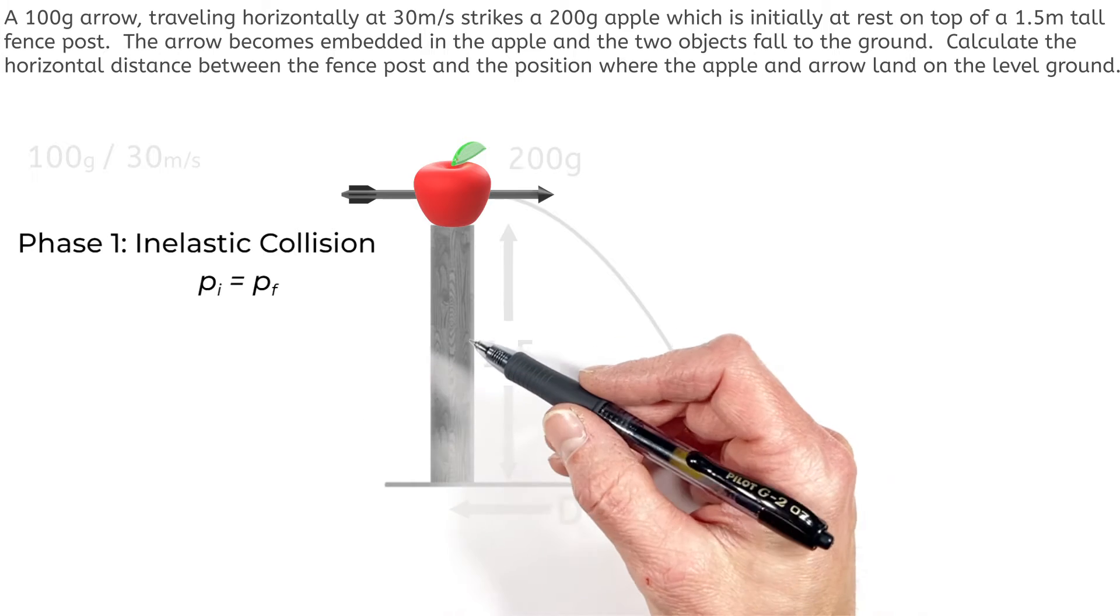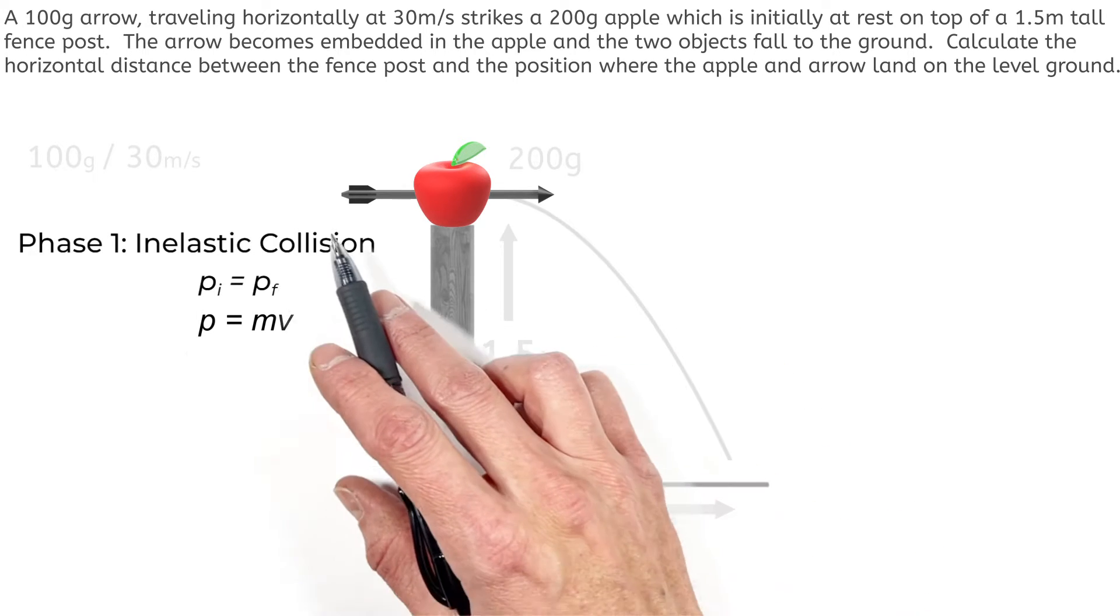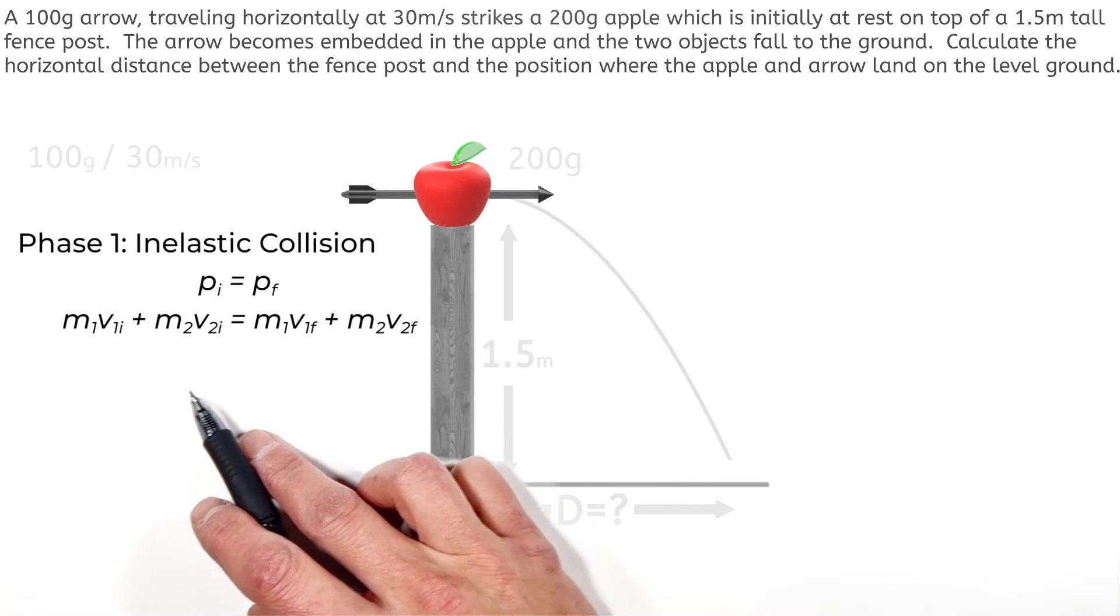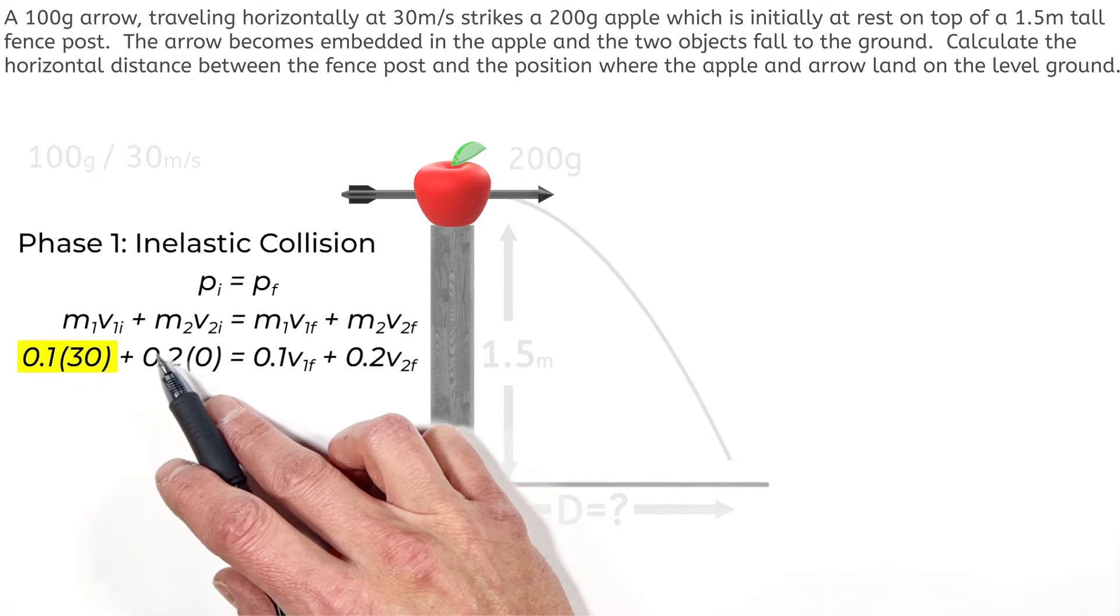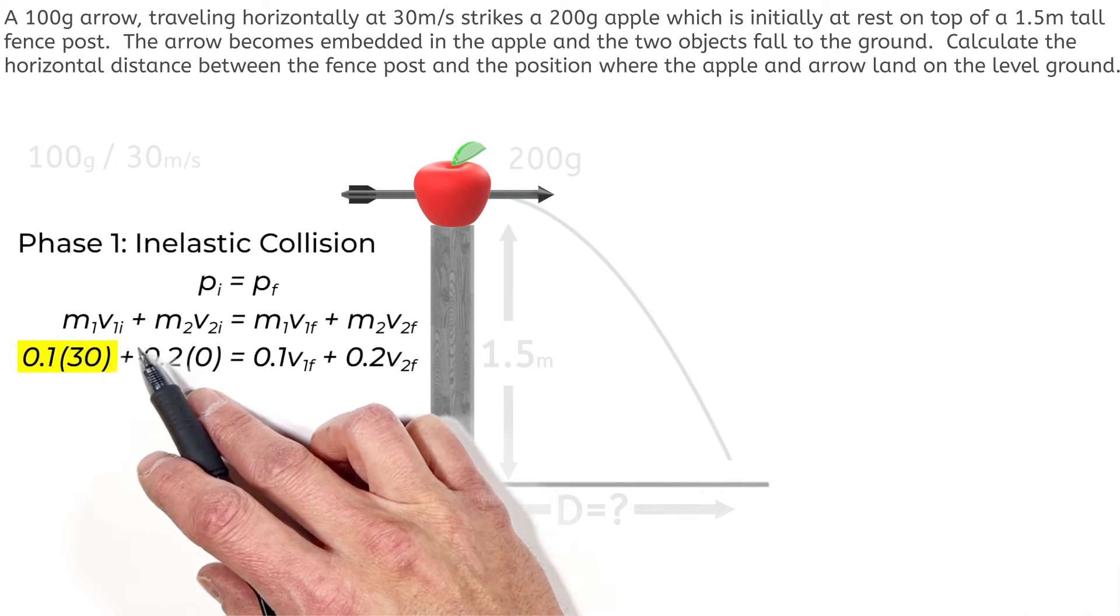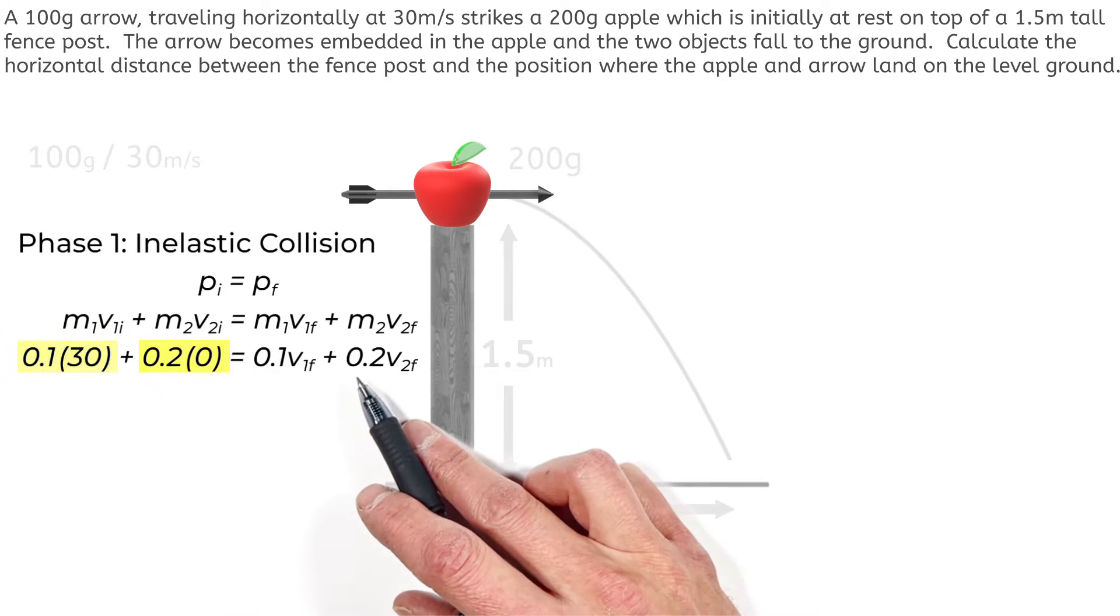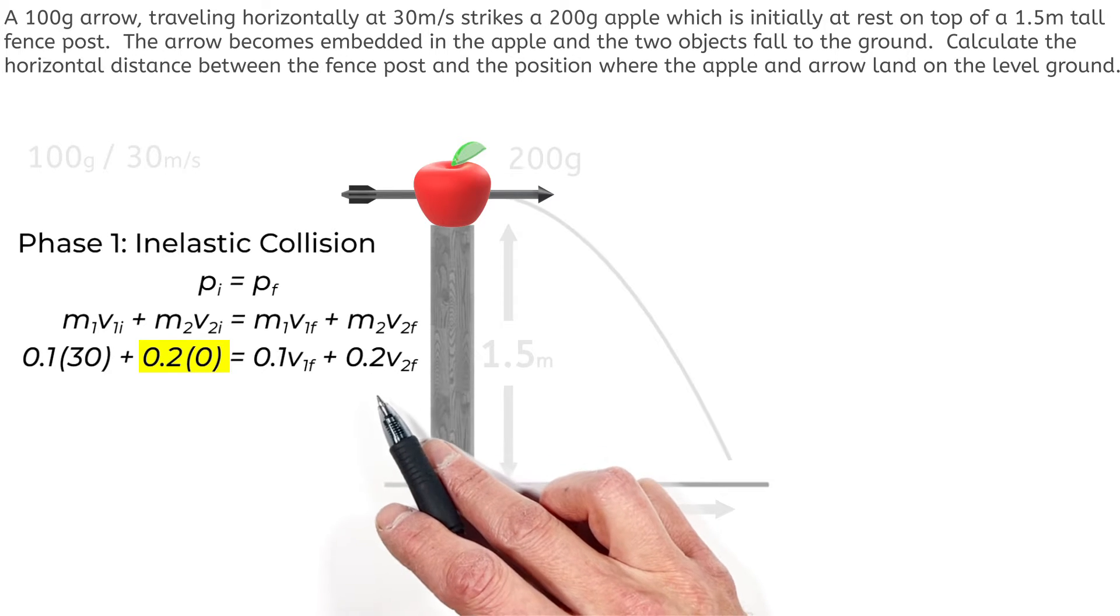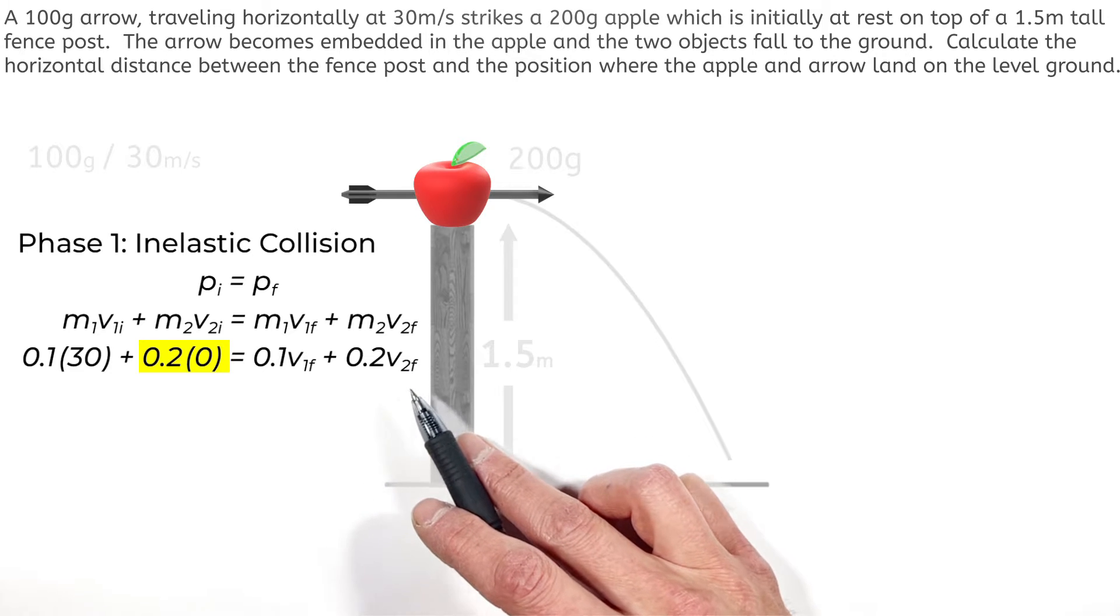Now momentum is given by the equation mv, mass times velocity. And because we're dealing with two different objects here, the arrow and the apple, we're actually going to have two initial momentums. One for the arrow, that's 100 grams, or really 0.1 kilograms, traveling along at 30 meters per second. And the other term is our momentum of our stationary apple, that's 200 grams, or 0.2 kilograms, and that's at rest. So we're going to show it as having a velocity of zero.